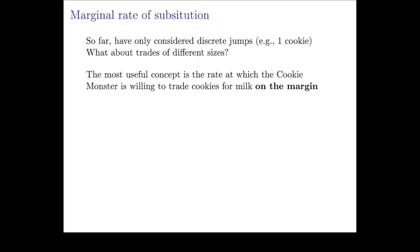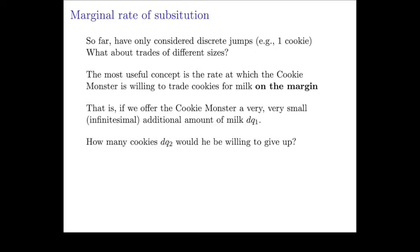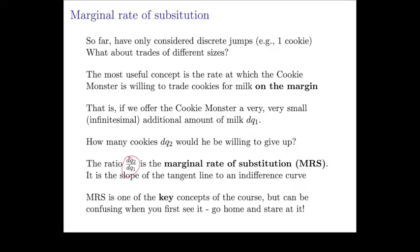So far we looked at what happens when there's a discrete change in the number of cookies or glasses of milk. But what about trades of different sizes? The most useful concept is the rate at which Cookie Monster is willing to trade off between milk and cookies at the margin — for very small changes. If we offer Cookie Monster a tiny extra amount of milk DQ1, calculus tells us about how things respond to very small changes. So if there's a very small change DQ1, how many cookies DQ2 is he willing to give up? That ratio DQ2 over DQ1 is what we call the marginal rate of substitution, and it tells us the slope of the indifference curve — the slope of the tangent line at any point.